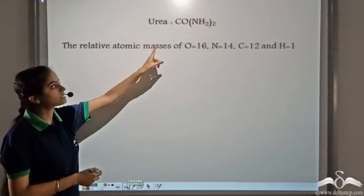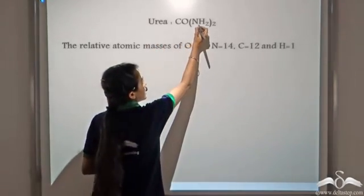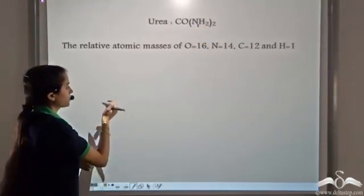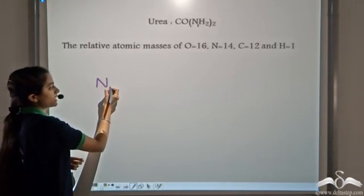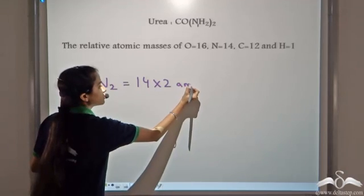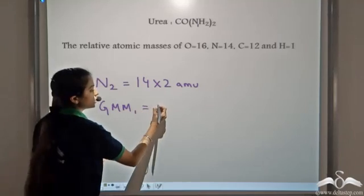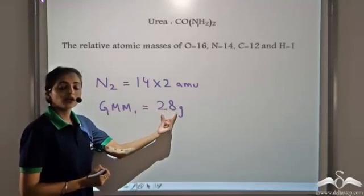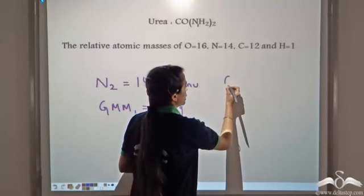First, let's calculate the amount of nitrogen present in urea. Observing the formula, since nothing is written before N, there is one N per NH2 group, giving us two atoms of nitrogen in urea. Each nitrogen has a relative atomic mass of 14, so for two atoms we get 14 into 2, which is 28 AMU. The gram molecular mass of the nitrogen content in urea is 28 grams.